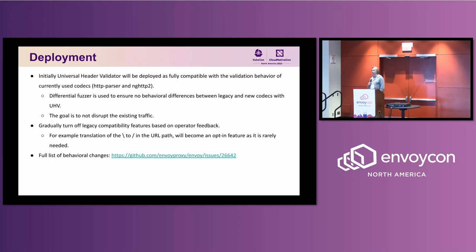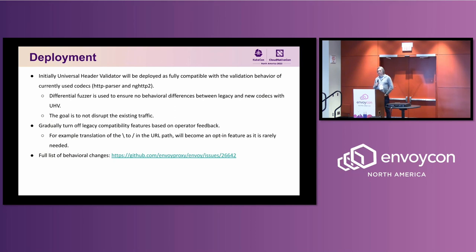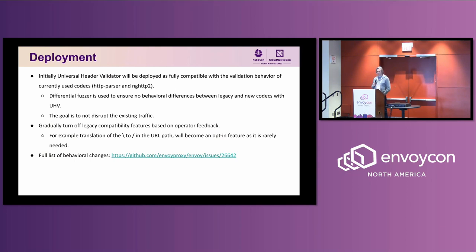For deployment, one of the key requirements was to prevent any disruptions to existing traffic. When we update Envoy to the Universal Header Validator, there will be no changes at first — it will be running in full compatibility mode with existing legacy behavior. To ensure there are no changes, we built a differential fuzzer, which we found very efficient for comparing codecs side by side. We're fairly certain there would be no unexpected behavioral changes.